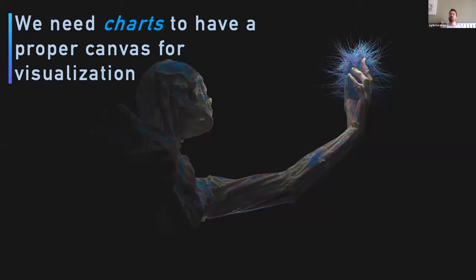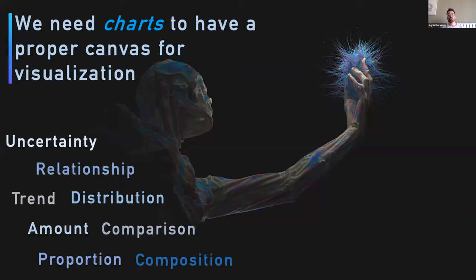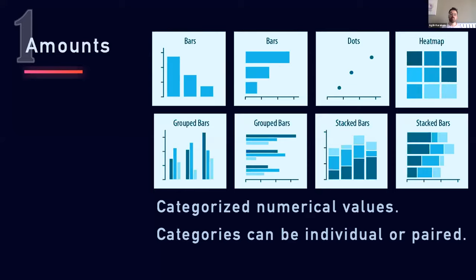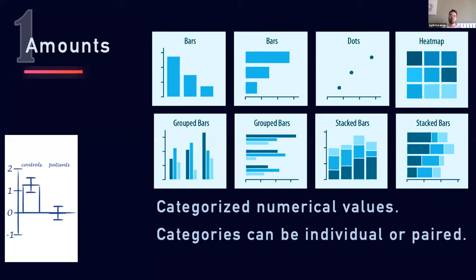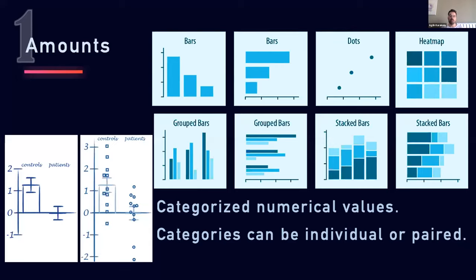Before doing that, we really need to know our charts so we can create a proper canvas for the type of data we have. We have different types: uncertainty, amounts, proportions, and comparisons. Starting with amounts — these are categorized numerical values and we can present them individually or in paired plots. One important note: you shouldn't use bar graphs to show a continuous distribution, because the same bar plots and error margins may point to different types of distributions. Check the #barbarplots tag on Twitter to learn how to use bar graphs better.